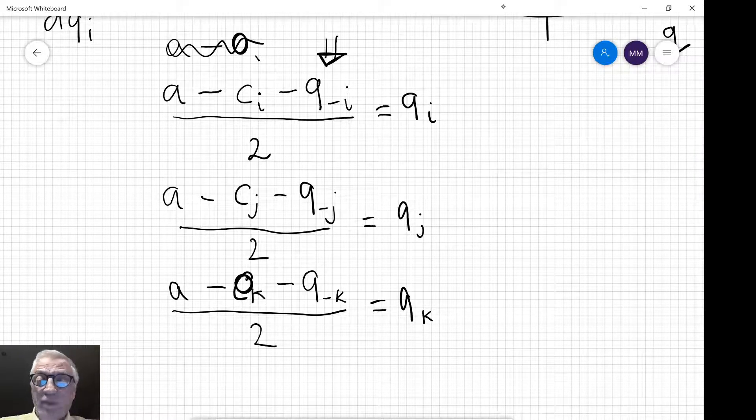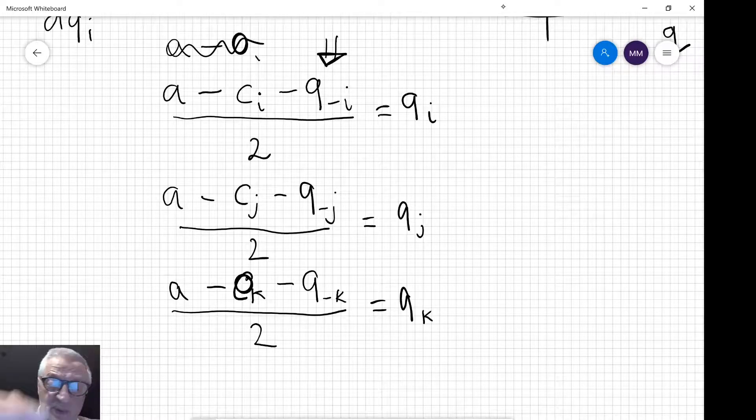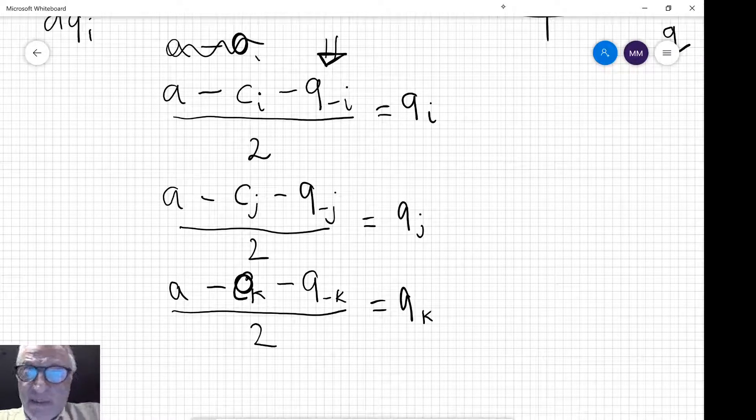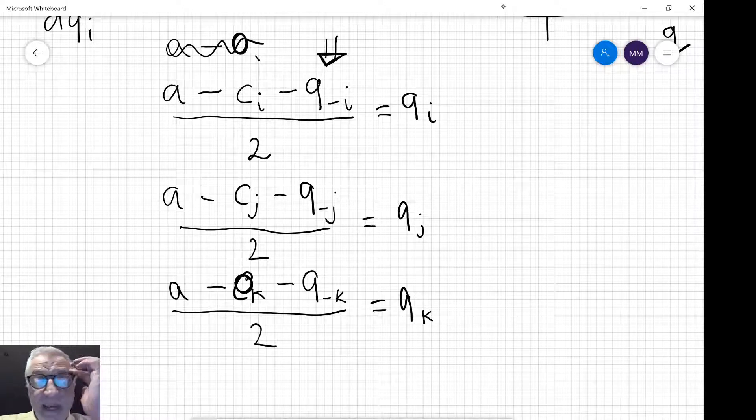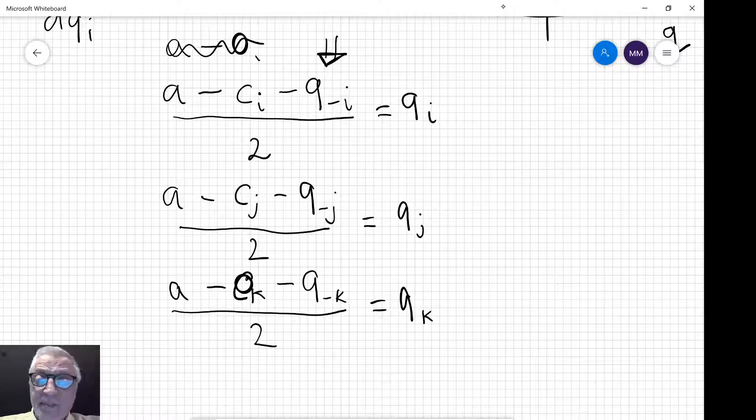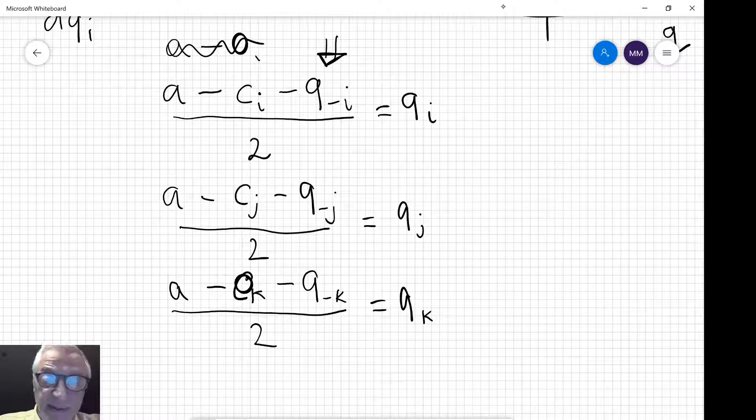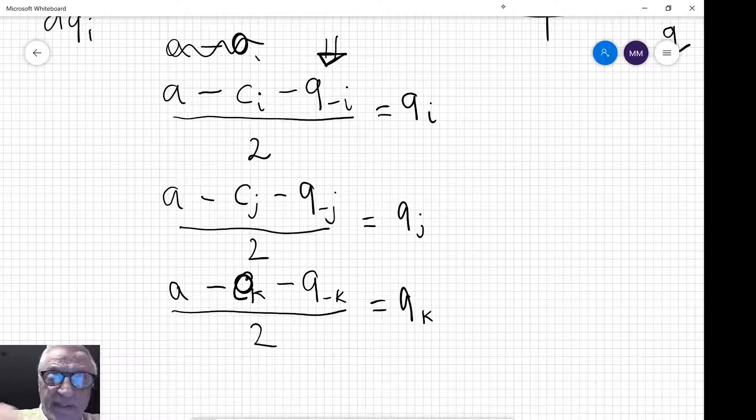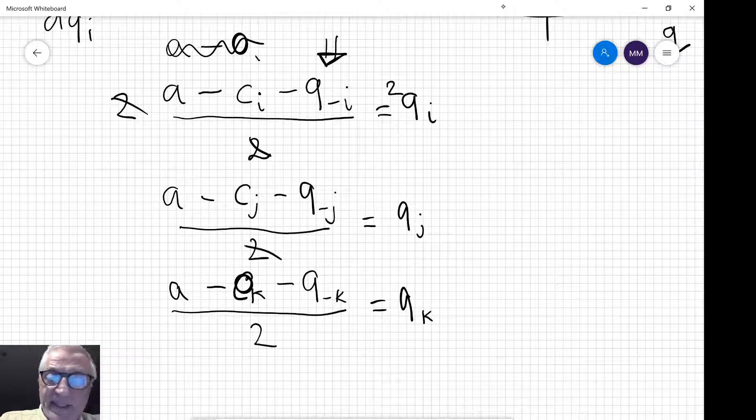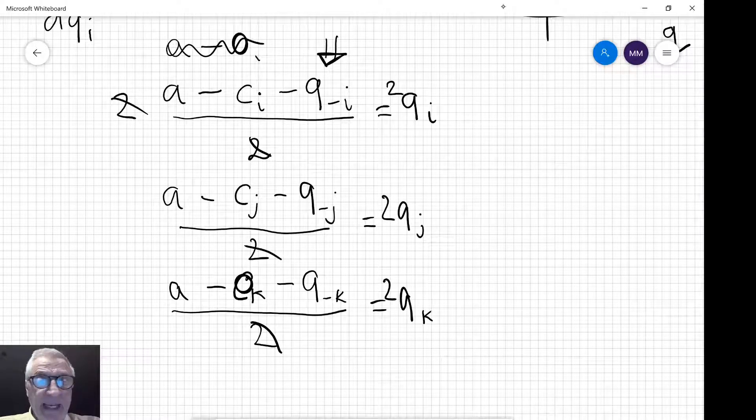If we had 25 firms we would have 25 of these first order conditions. But we can do a lot of simplifications here. First of all, let's multiply through by 2, so that disappears, that disappears, and that disappears.